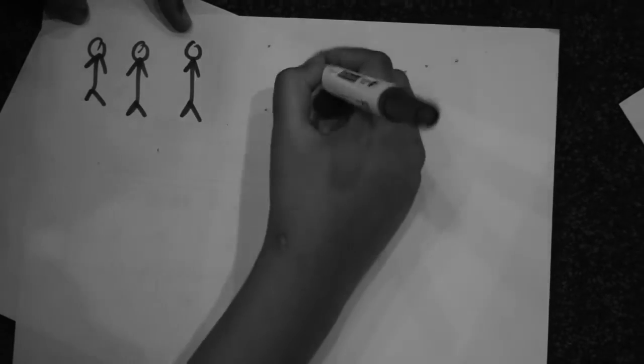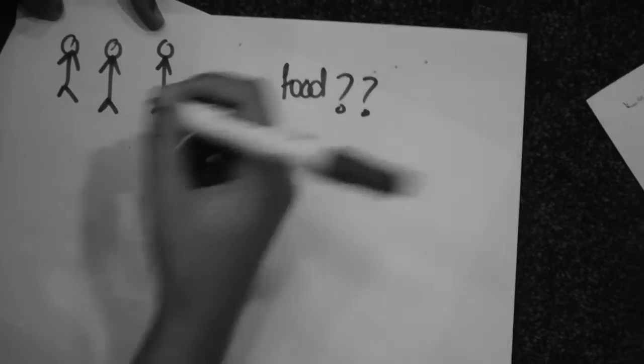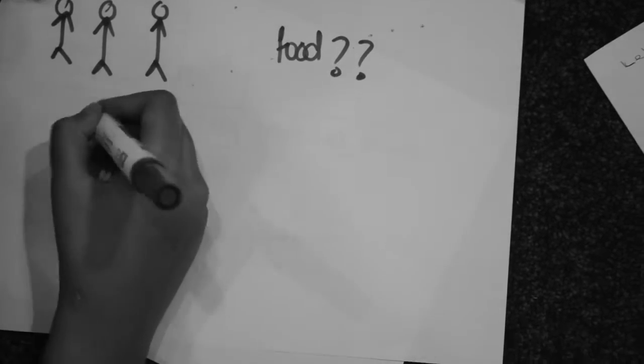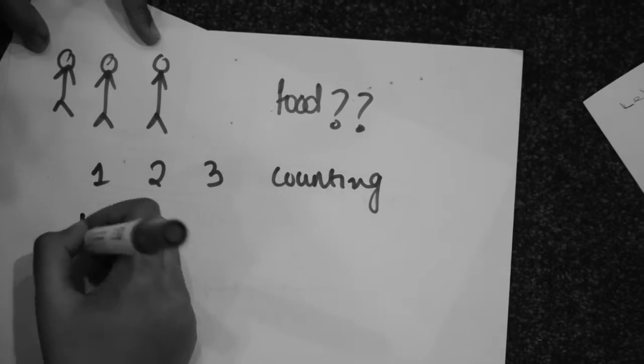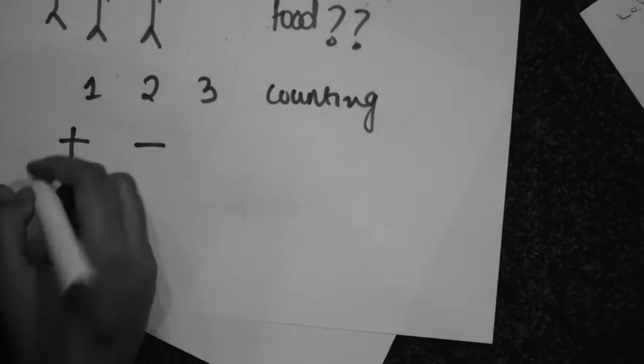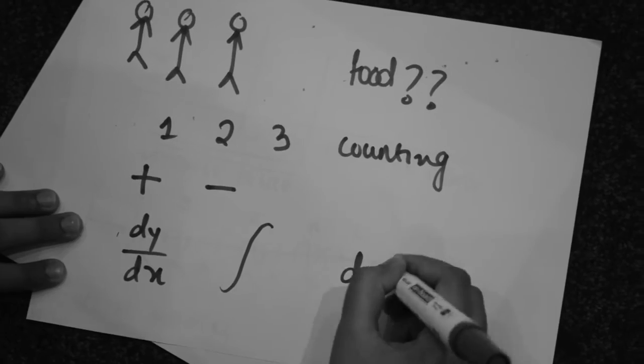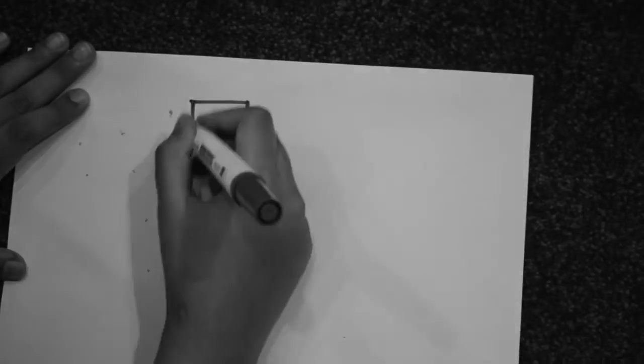A bunch of people wanted to know how much food they had and hence, they invented counting. Then, they wanted to know how much more or less of food they need. Hence, they invented addition and subtraction. Then, moving into the future, we started asking questions and hence invented calculus and probability.